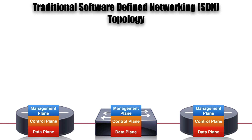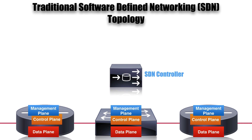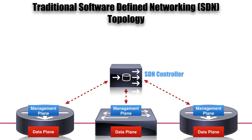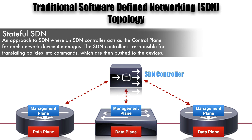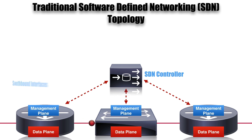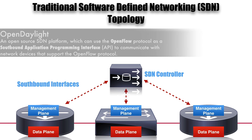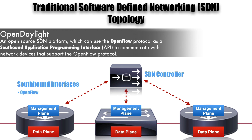With SDN, we can take the control plane from these different devices and have those control planes all go live inside of the SDN controller. The SDN controller can run the routing protocols or the spanning tree protocol, administer all that, and push instructions down to the devices. This way of doing SDN is called a stateful approach, where the controller does the heavy lifting of reconfiguring the fabric and translating policies into specific commands. The SDN controller communicates down to devices through a southbound interface or southbound API. One of the most popular types of SDN controllers today is called OpenDaylight, which uses a protocol called OpenFlow as its southbound API between the controller and routers and switches.